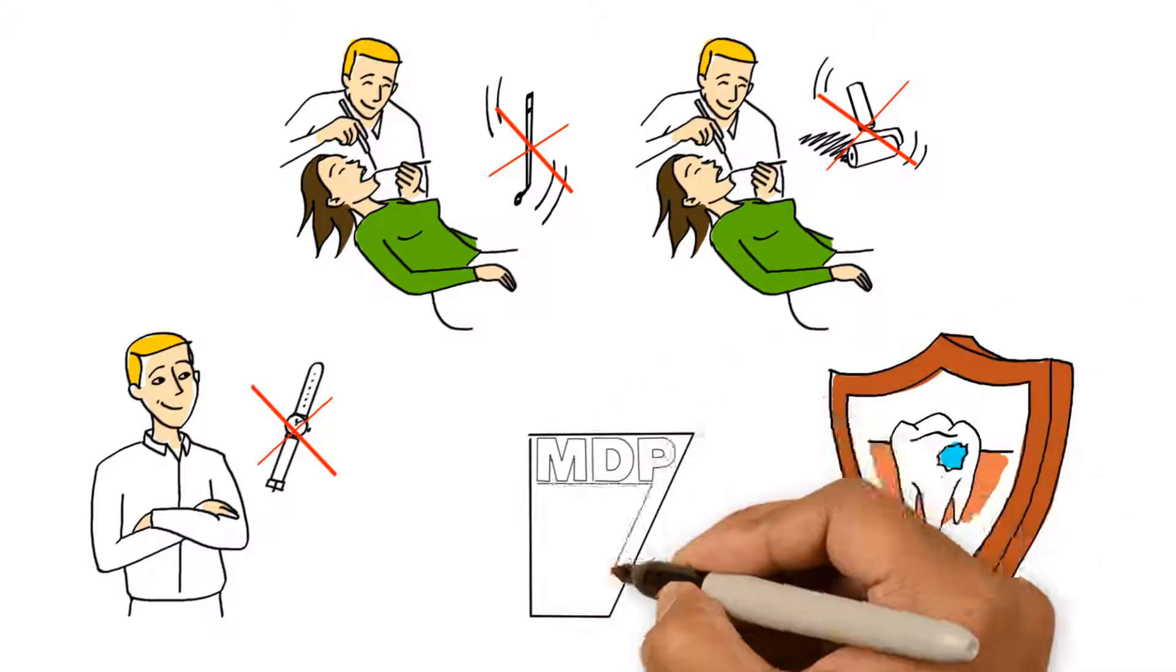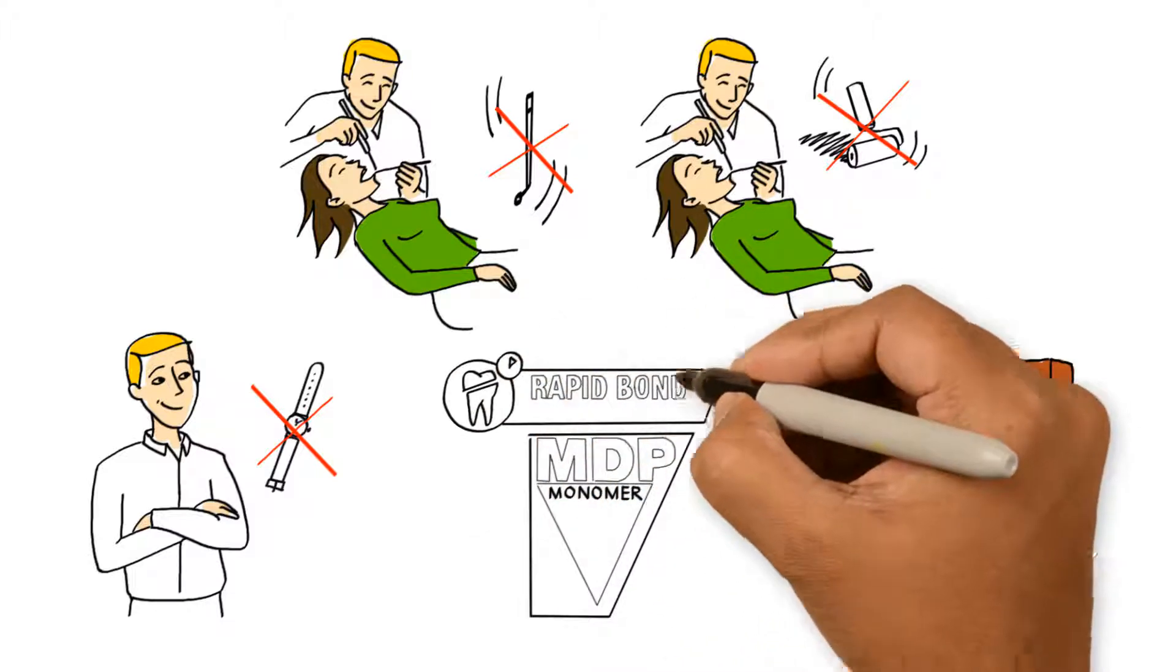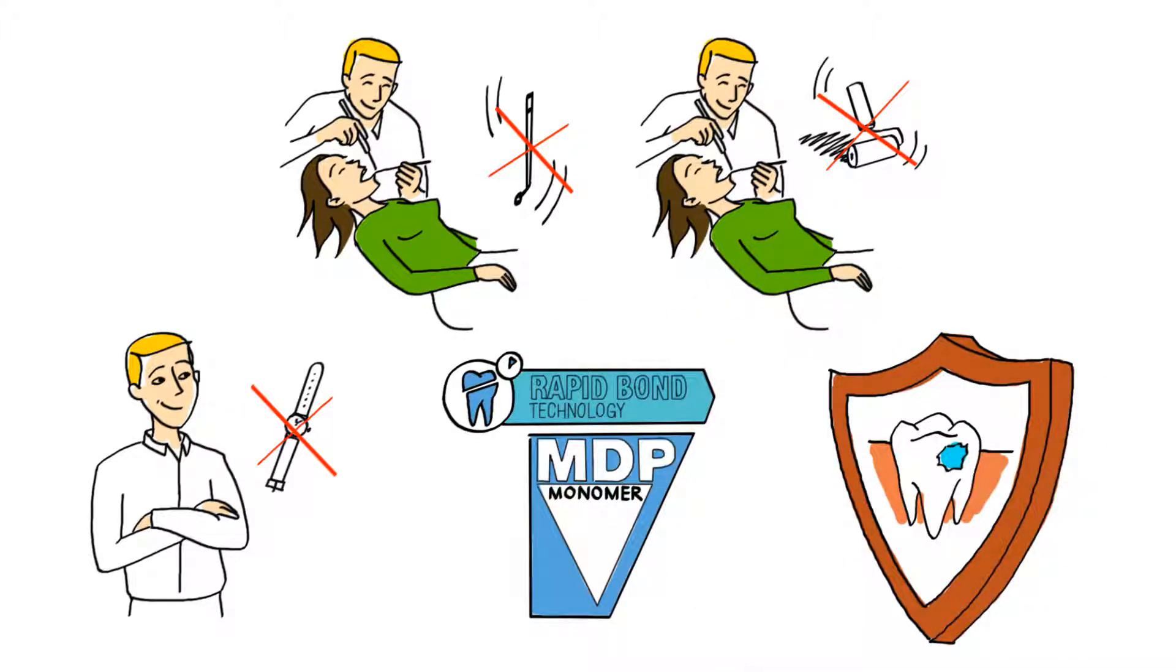Cure Array's famous MDP monomer, combined with a brand new fast penetration technology, offers an aesthetic thin film layer and long-lasting result.